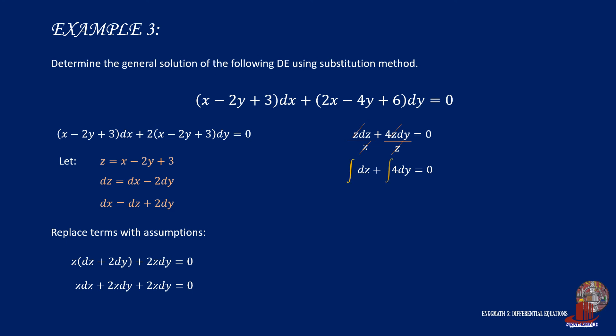As they are separable differential equations, we can integrate them readily, which yields z plus 4y is equal to c. Now place back the values for z to have x minus 2y plus 3 plus 4y is equal to c. Collect y's to have the final general solution as x plus 2y plus 3 is equal to c.